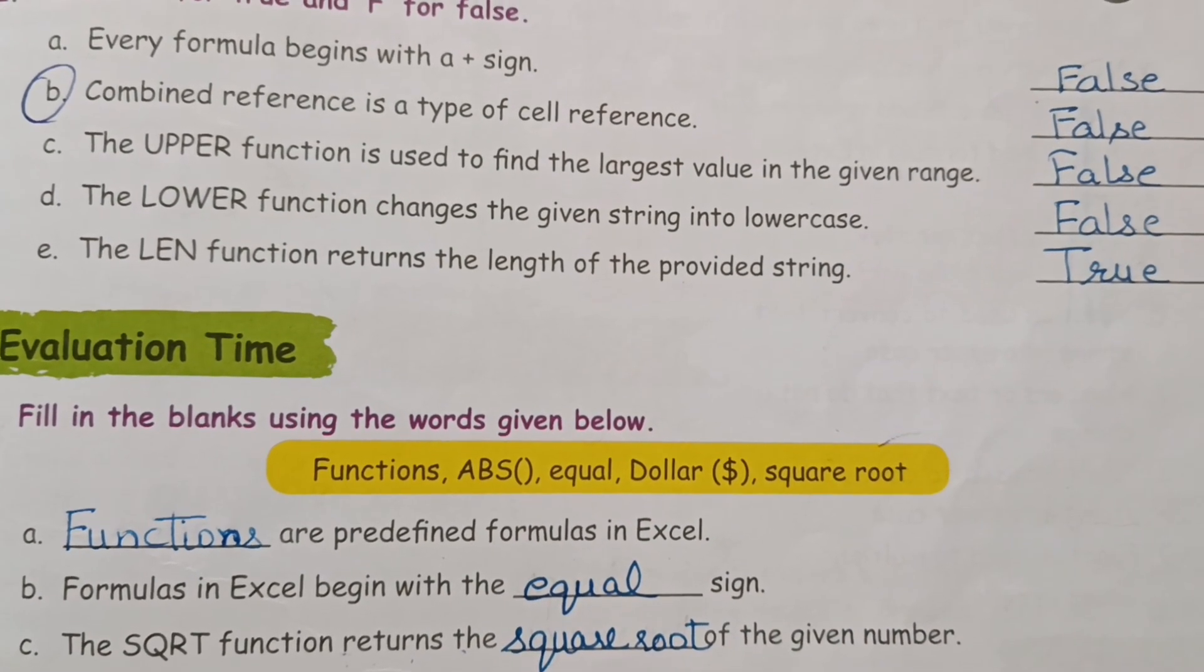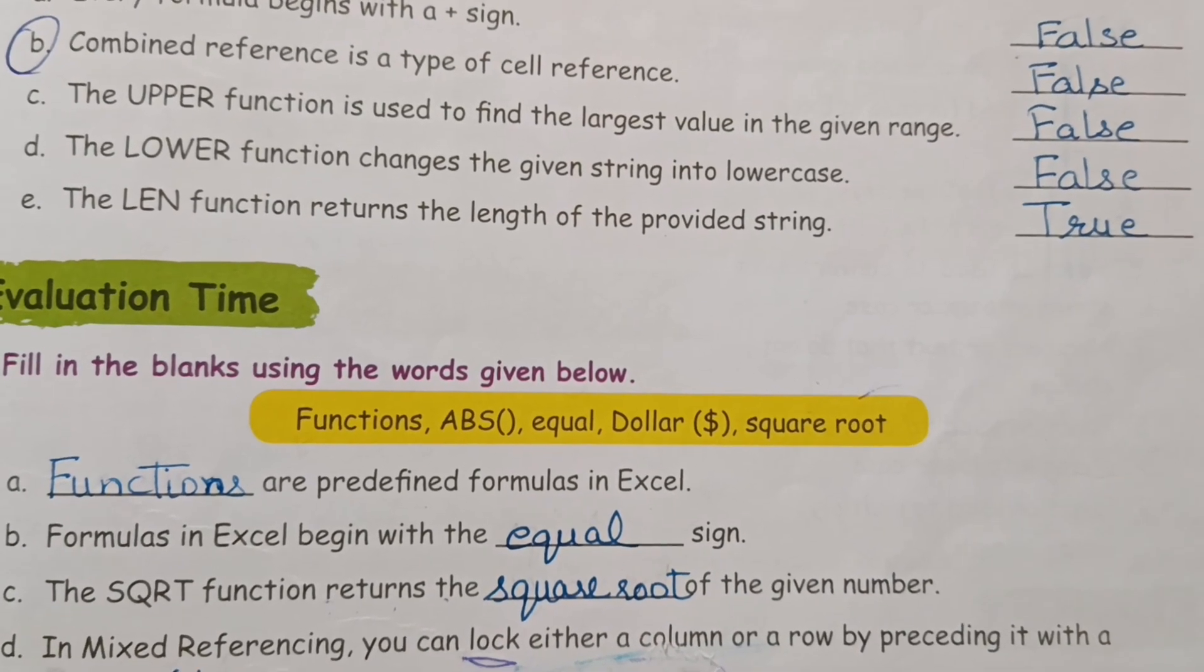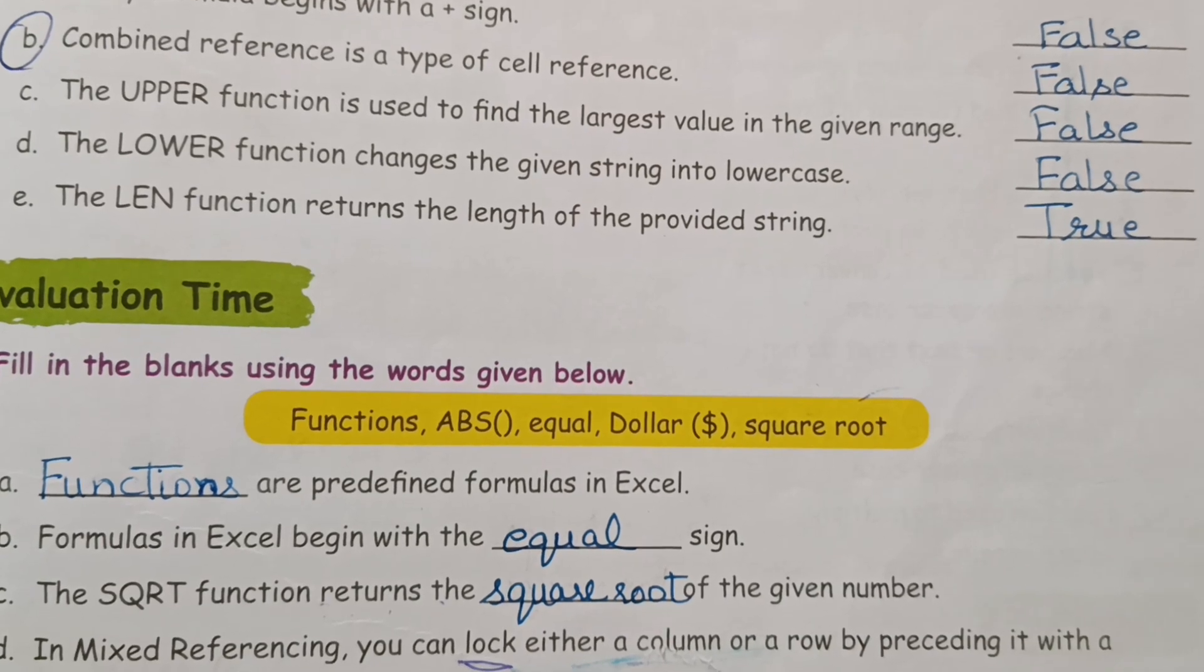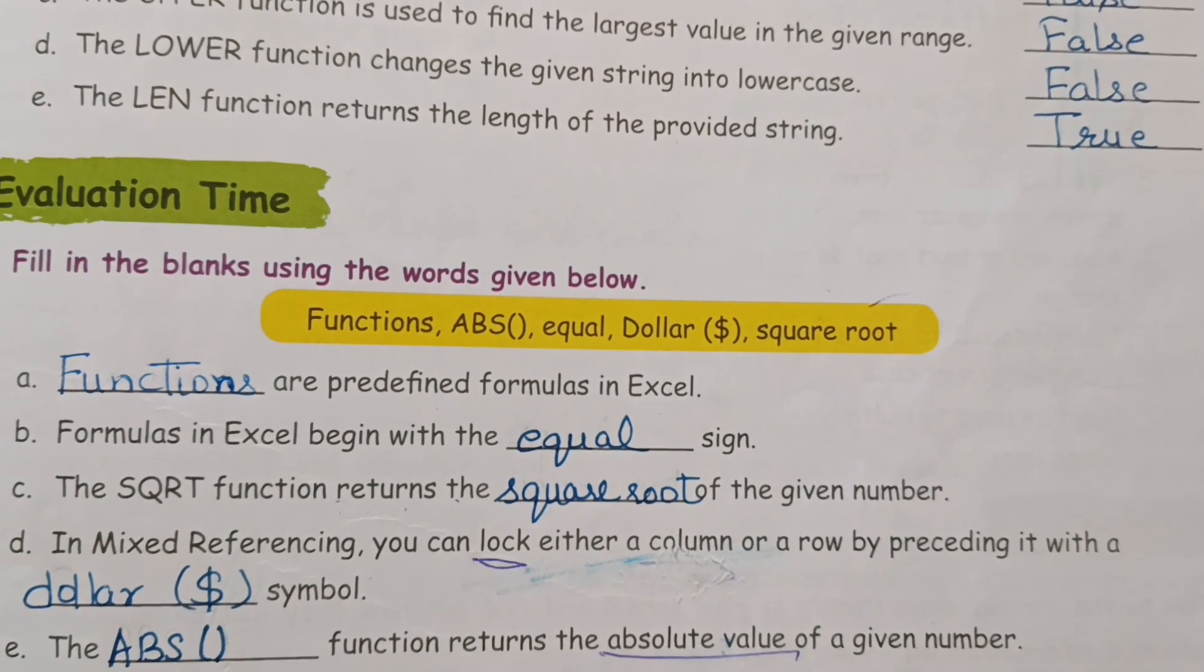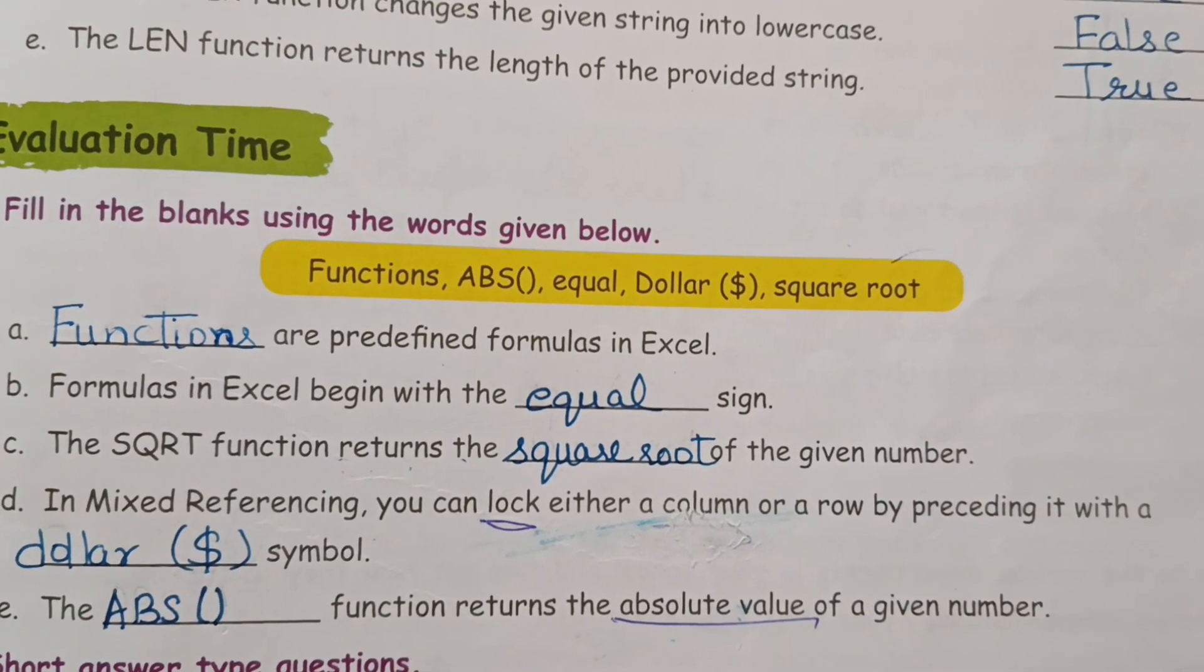Options are given here. Functions are predefined formulas in Excel. Formulas in Excel begin with the equal sign. The SQRT function returns the square root of the given number. In mixed referencing, you can lock either a column or a row by preceding it with a dollar symbol.